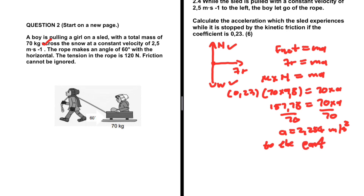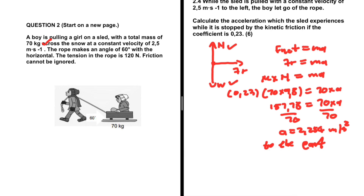The acceleration is to the east. By Newton's second law, the object accelerates in the direction of the net force. The frictional force is to the east, so the acceleration is also to the east, because in this case the frictional force is our net force. That completes question two.